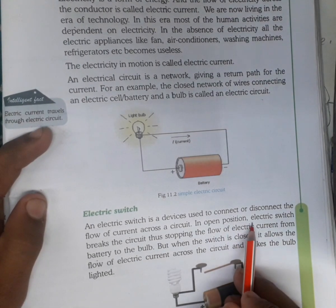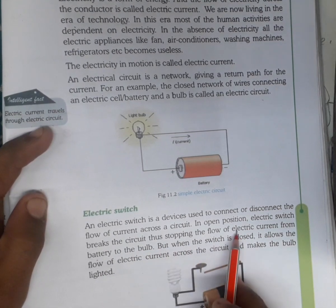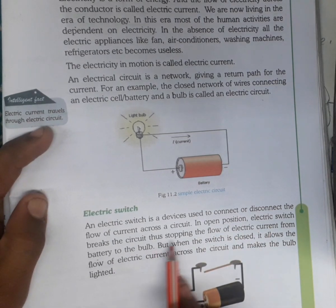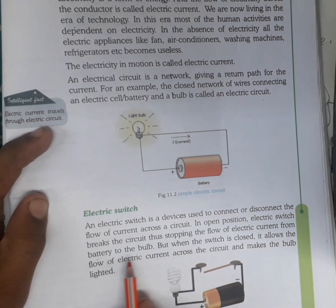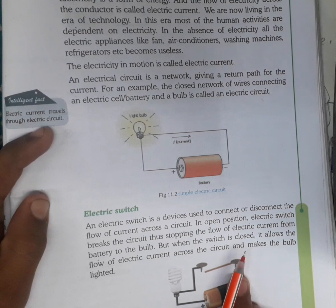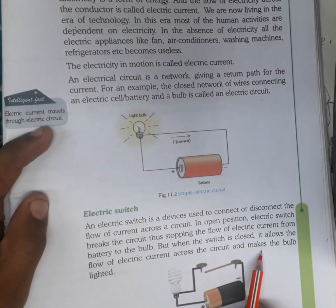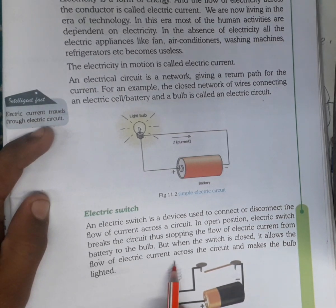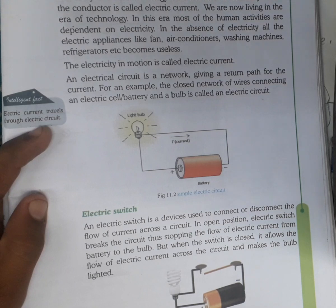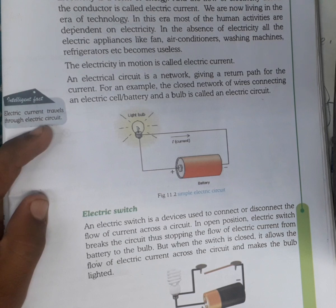In an open circuit, the electric switch breaks the circuit, thus stopping the flow of current. Open circuit में electric current break हो जाती है। But when the switch is closed, it allows the flow of electric current throughout the circuit, making the bulb light up.